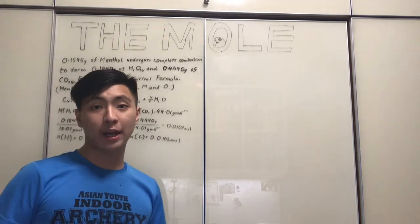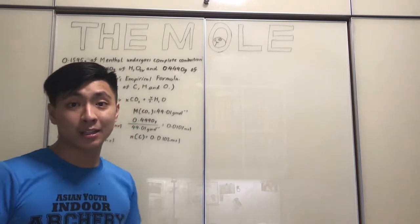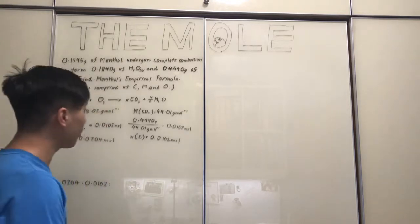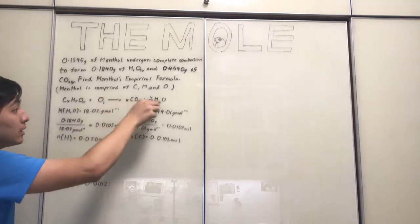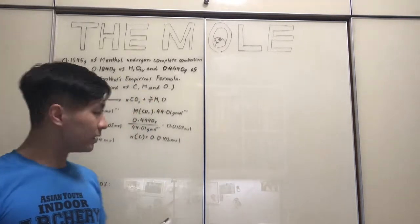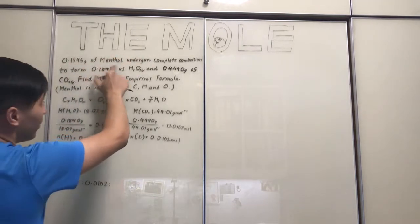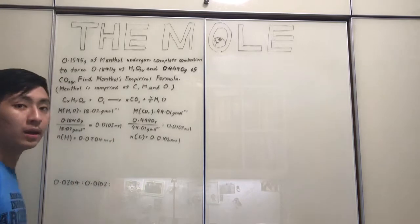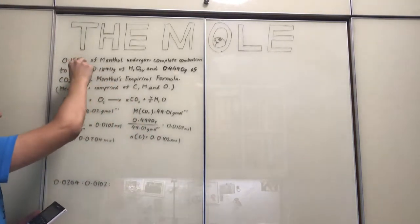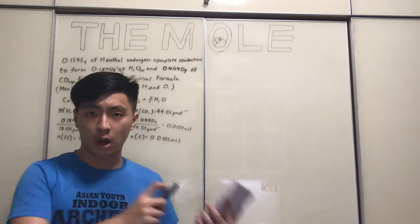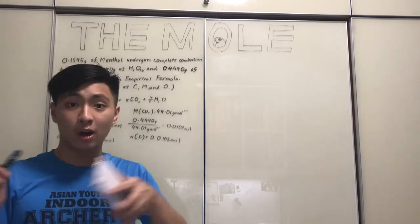Why didn't we calculate oxygen from the products? Because in complete combustion you're burning an organic compound in excess oxygen conditions, so it doesn't make sense to calculate the oxygen from those compounds. Instead, we use the original 0.1595 grams of menthol. In 0.1595 grams of menthol, a proportion of that mass belongs to carbon, a proportion to hydrogen, and the remaining proportion belongs to oxygen.